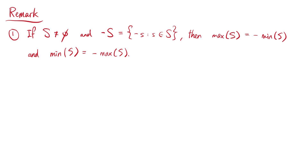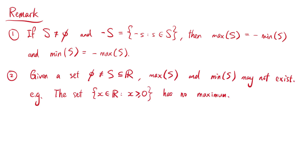Also, given a set s which is a non-empty subset of the real numbers, the maximum and the minimum of s may not exist. For example, the set of elements x in the real numbers such that x is greater than or equal to 0 has no maximum.